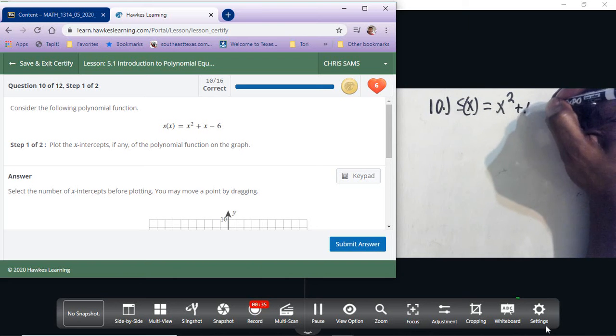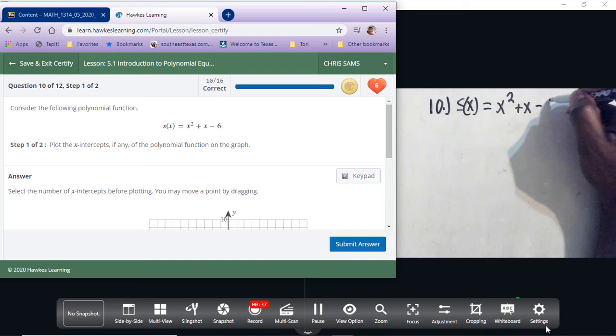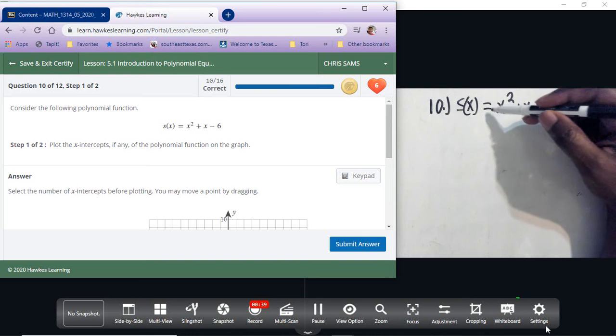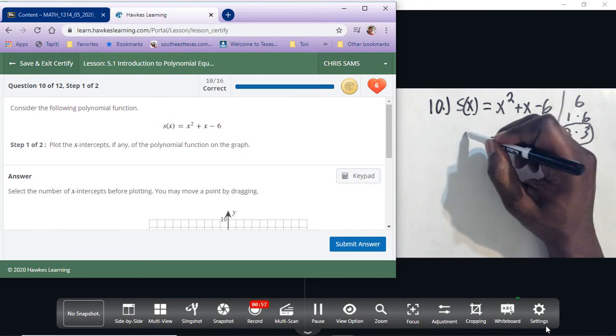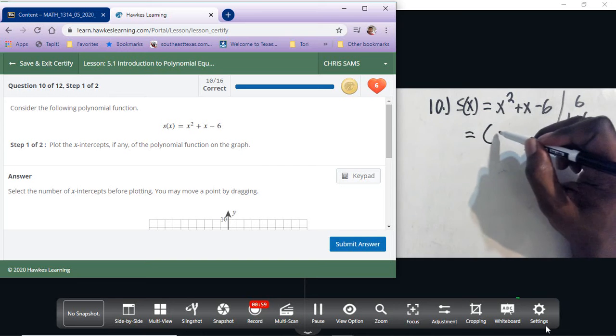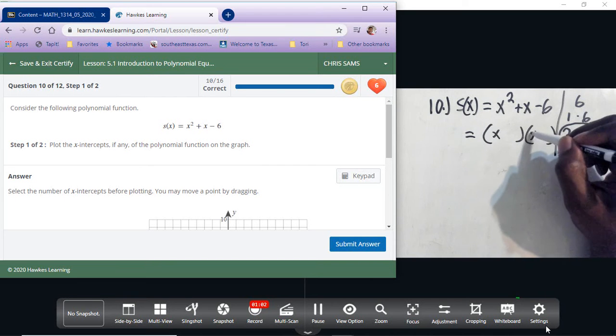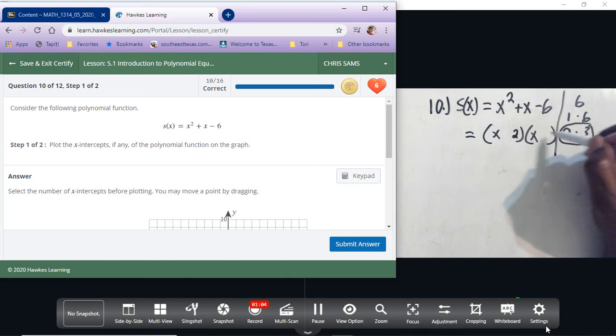Plus x minus 6. So to factor, first which is understood to be a 1 times 6, the factors of 6 are 1 and 6, 2 and 3. We want to subtract those numbers to get a 1, and if you subtract 2 and 3 you get 1. So this will factor and then you put the 2 and the 3 in.